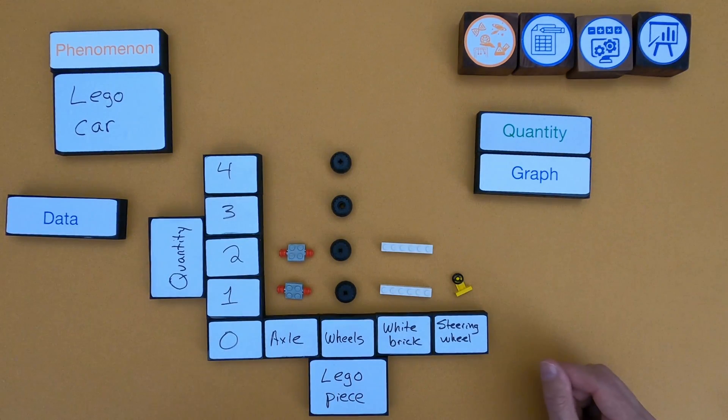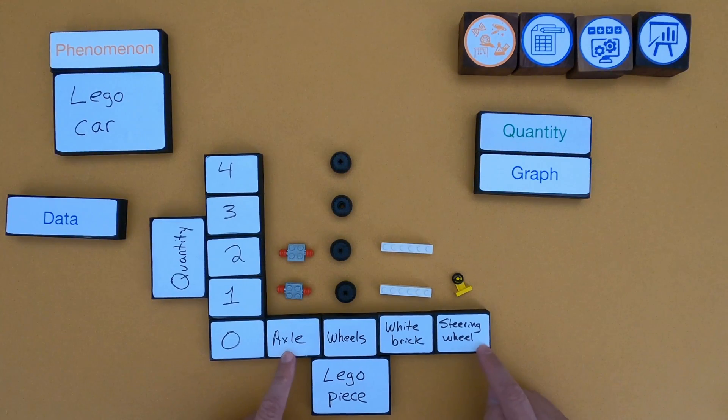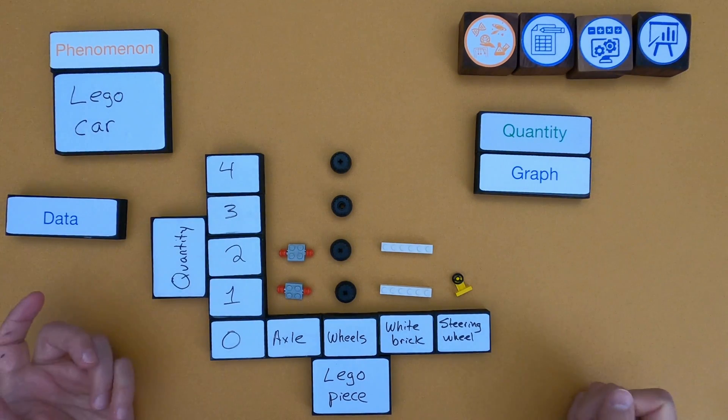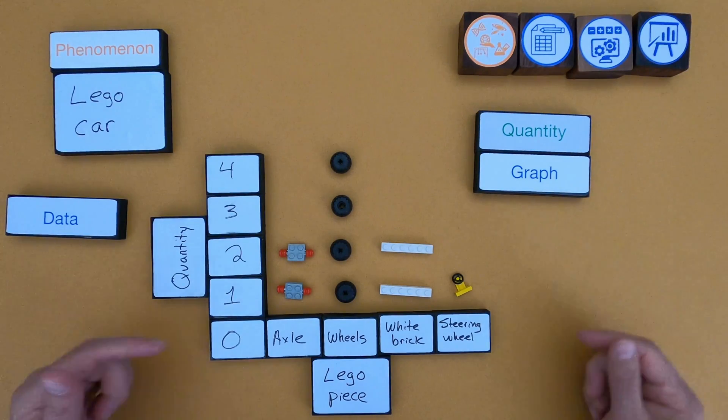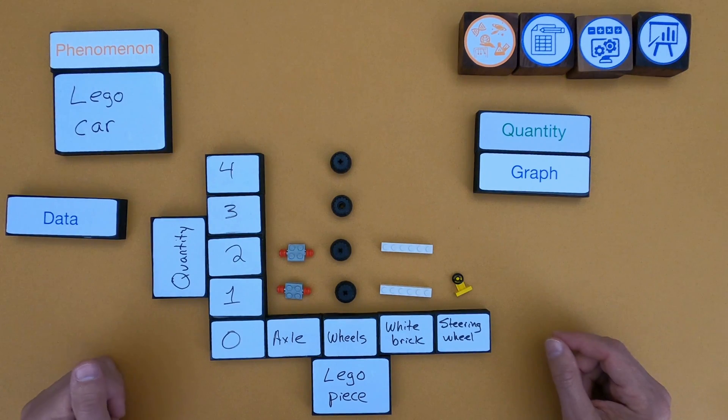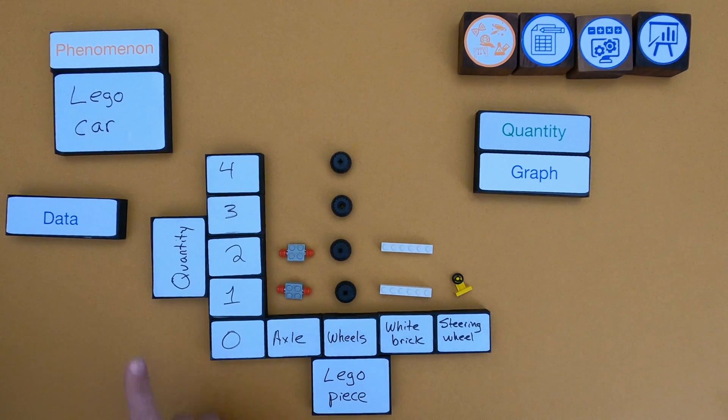Okay, so now I'm showing the amount. So I've got the qualities along the bottom. Axle, wheel, white brick, and steering wheel. And now I'm showing the quantities. So I could look at this graph and I could say, oh, it's easy to see that you have two axles or you have four wheels. What's the one thing that I'm missing on this graph? I'm missing a title. Remember when you're coming up with a title, you just talk about what's on the vertical and then what's on the horizontal axis.